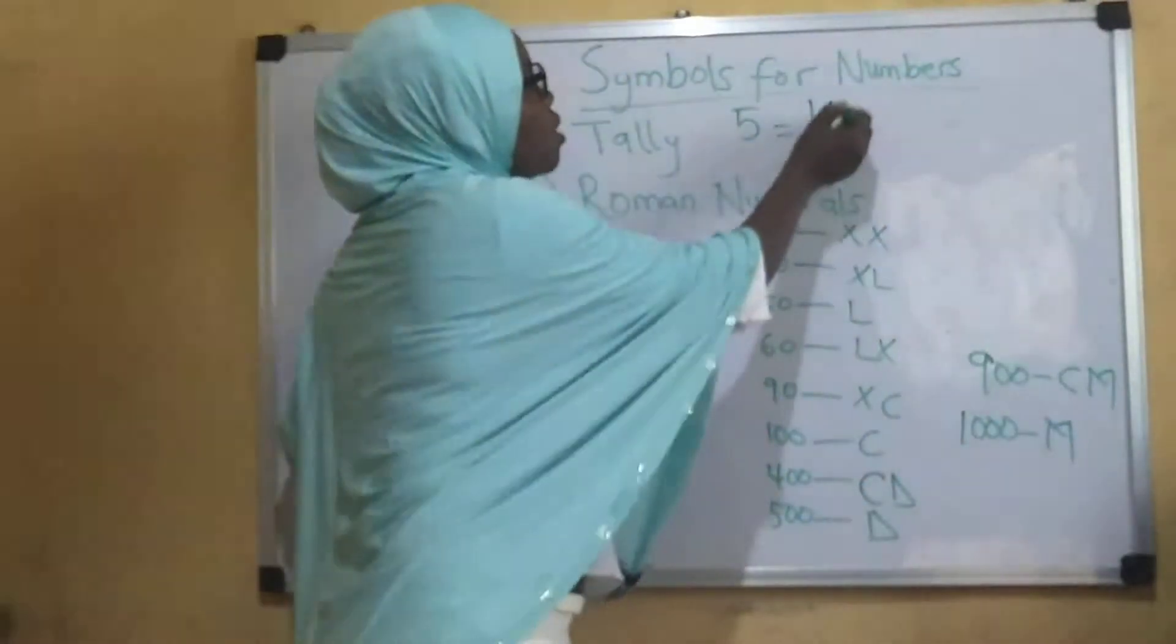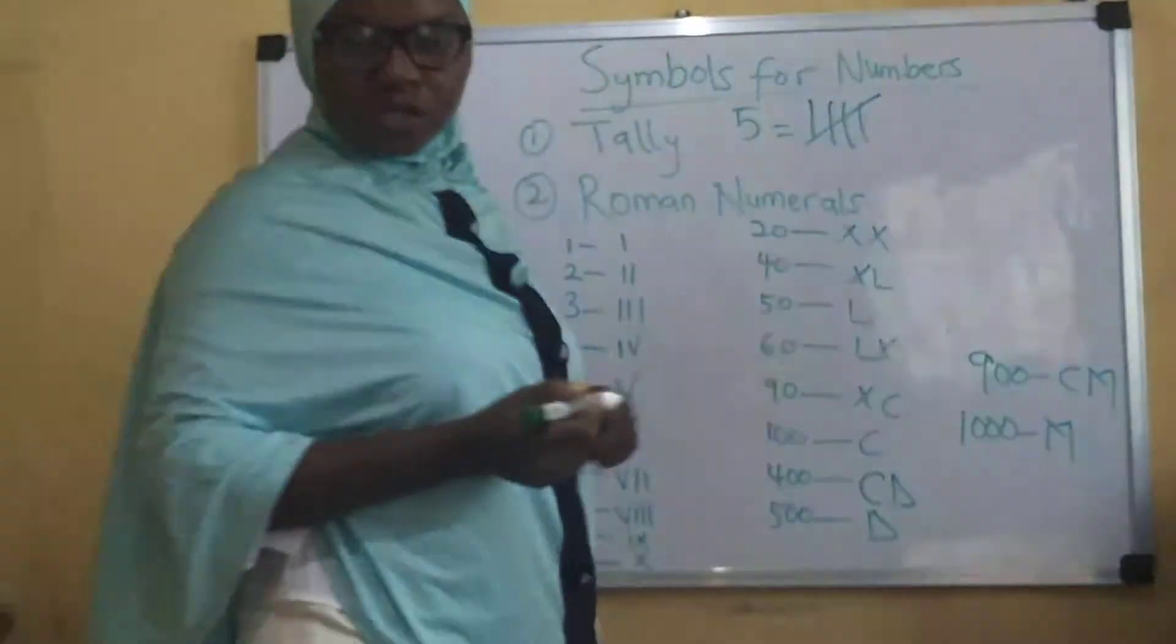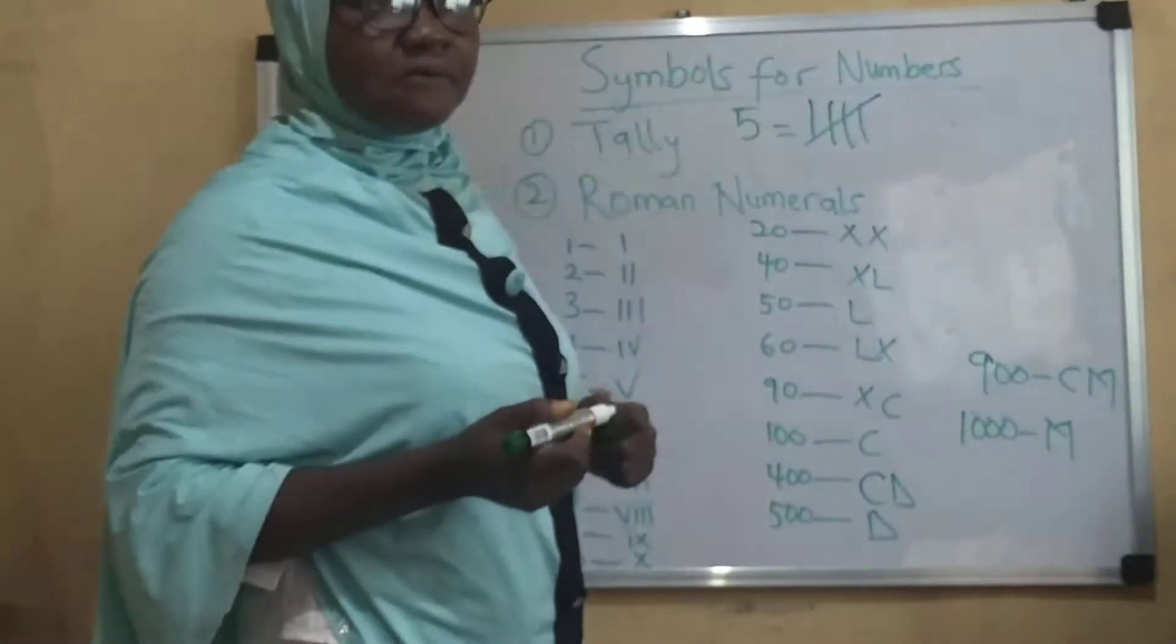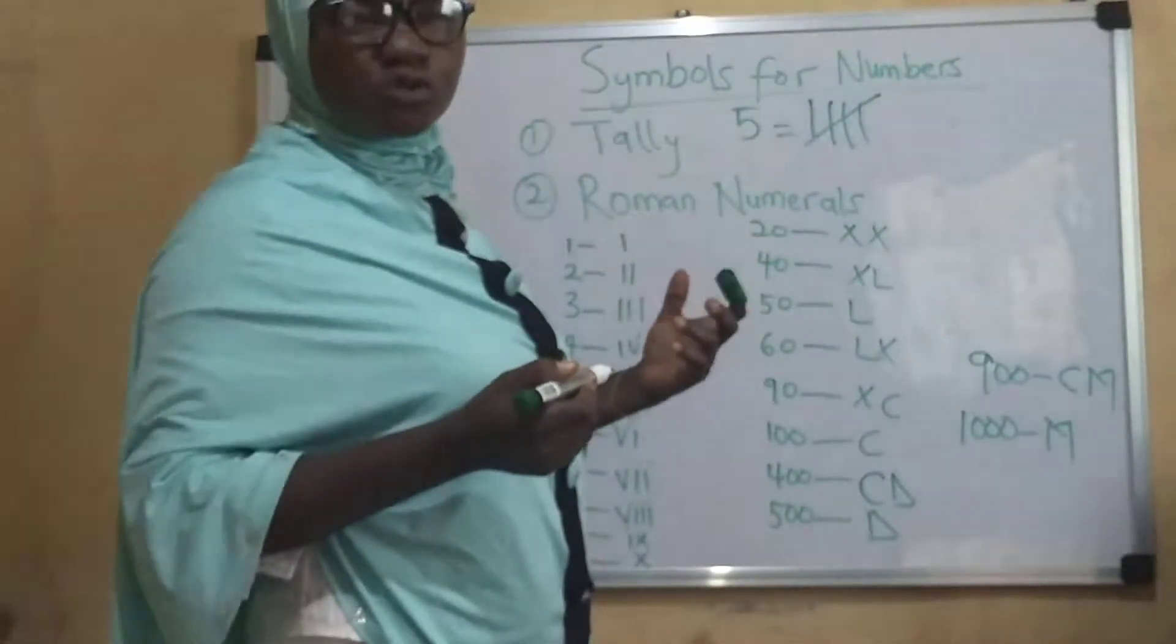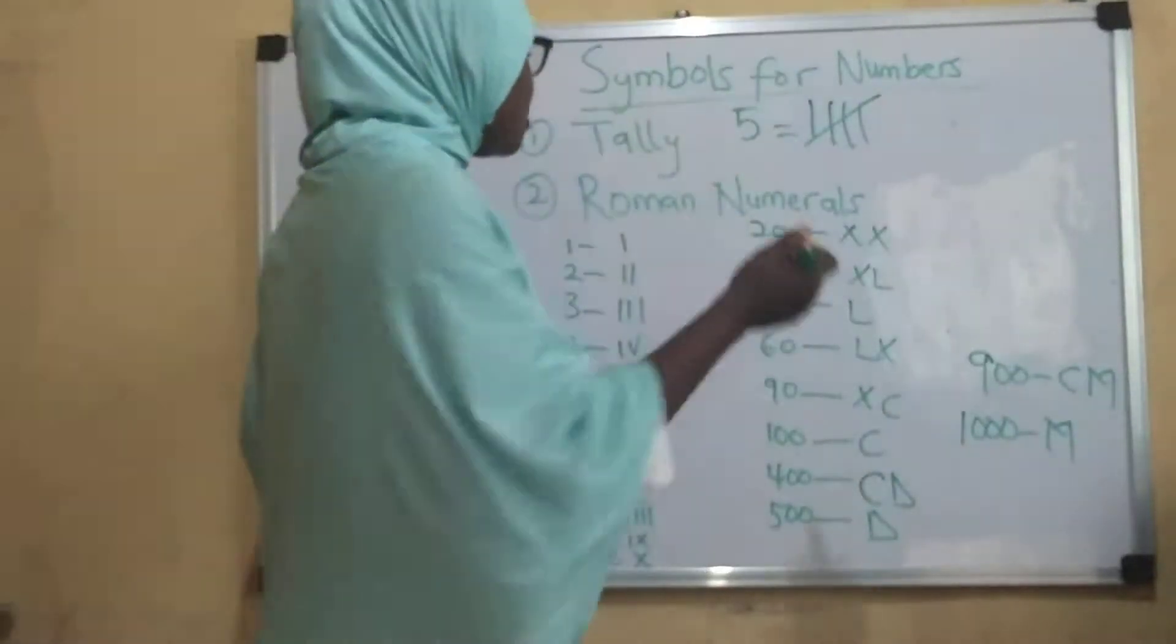So I'll say 1, 2, 3, 4. Now the 5th stroke, you just need to cross this. Does that make sense? Now if I want to use tally as well to represent, let's say 10 or 12, let's see how you can do that.